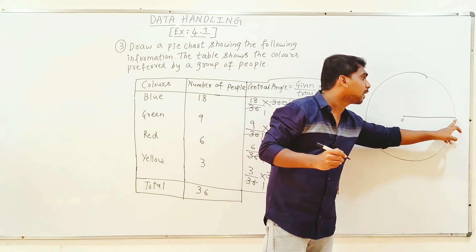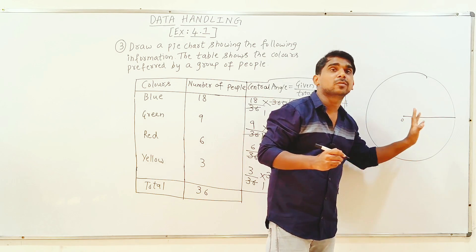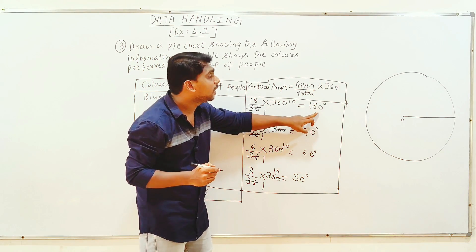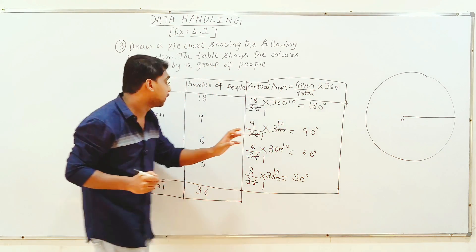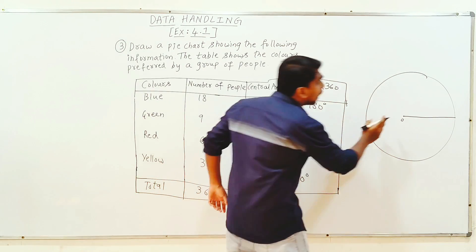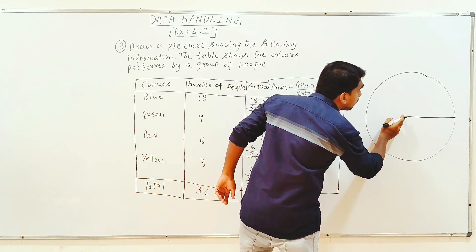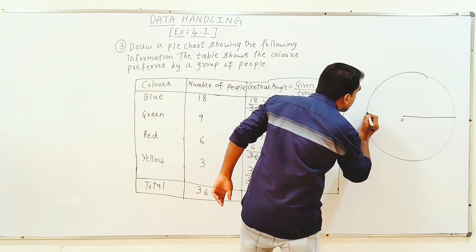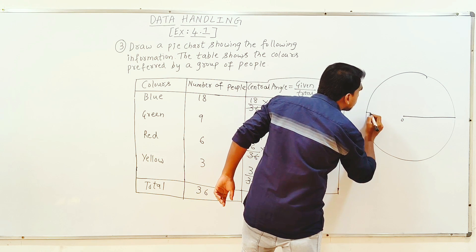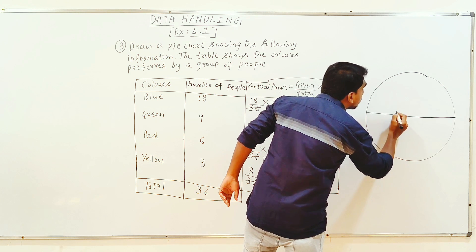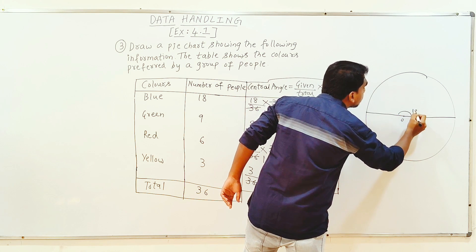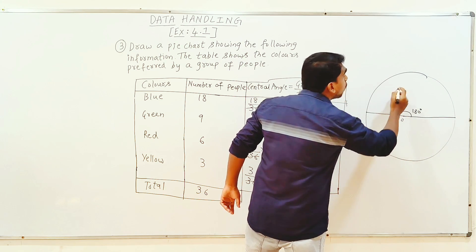Look at the straight line. The first angle is 180 degrees. Blue color is 180 degrees. I have a protractor. How do you want to do 180 degrees? You have to join — this is a straight line, nothing but a straight line. It is 180 degrees. This is the blue color.